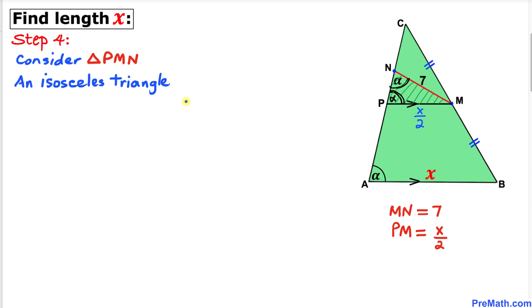Therefore, this is an isosceles triangle, so this side length equals this side length. Therefore, PM equals MN. Let's fill in the blanks.